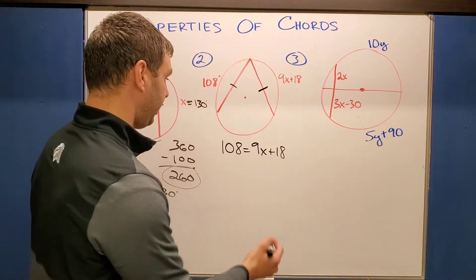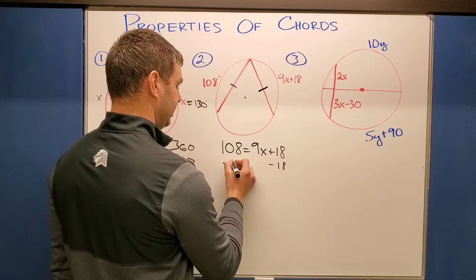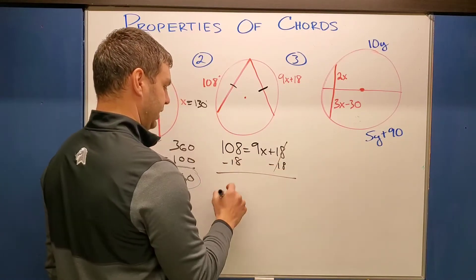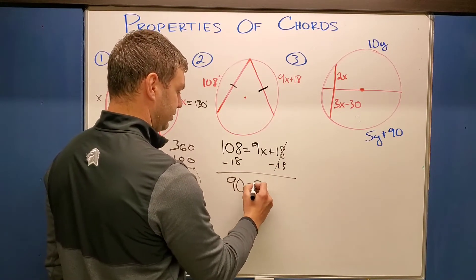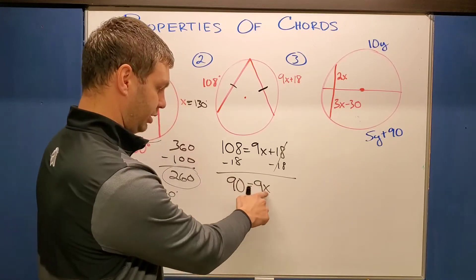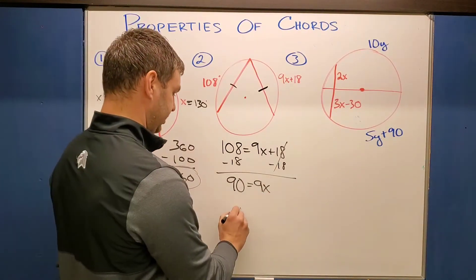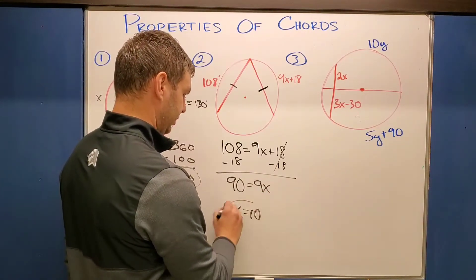So if I solve for X here, doing a little bit of algebra, subtract 18 on both sides. 108 minus 18 is 90 equals 9X. And then, of course, 9 times what is 90? Well, X has to be 10 here. X equals 10.